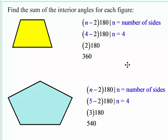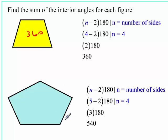We're going to find the sum of interior angles for each figure. If you have four sides, plug in 4 for n: 4 minus 2 times 180. Do what's inside the parentheses first — that's 2 times 180 — giving a sum of 360. For five sides, 5 minus 2 is 3, and 3 times 180 is 540, the sum of interior angles in a pentagon.